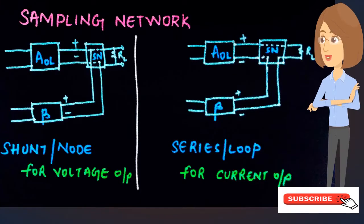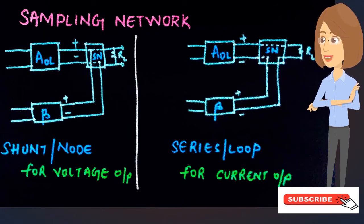In the sampling network, we only take a part of the output signal from the basic amplifier and repeat that signal back to the basic amplifier through the feedback network. We do not completely use the entire output — we only take a part of it. This is done in two ways: shunt sampling and series sampling. This method is specific to the type of output signal — if the output is voltage, it is shunt sampling; if the output is current, it is series or loop sampling.